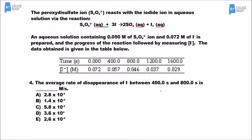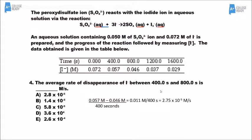For number four, we just look at the numbers. Between 400 seconds and 800 seconds, it goes from 0.057 to 0.046. We calculate how much disappeared and divide by 400 seconds, and we get the answer of A.